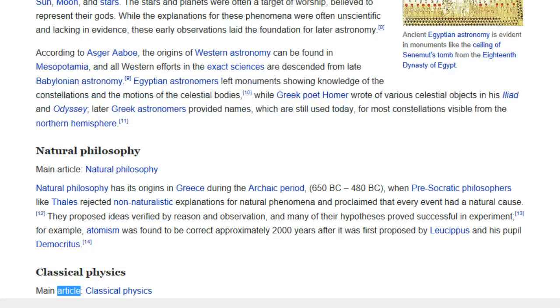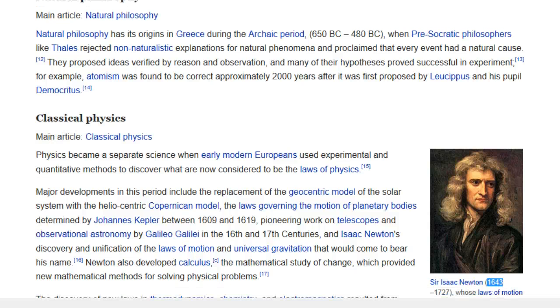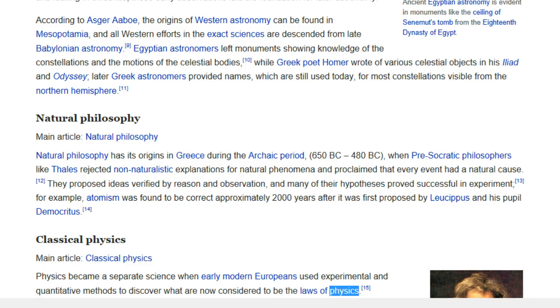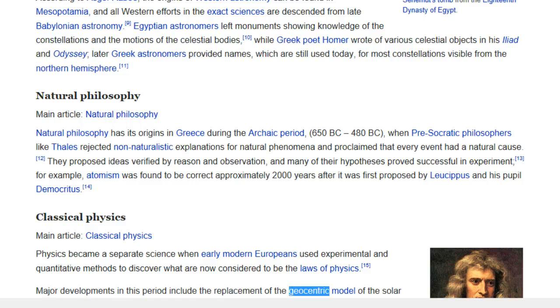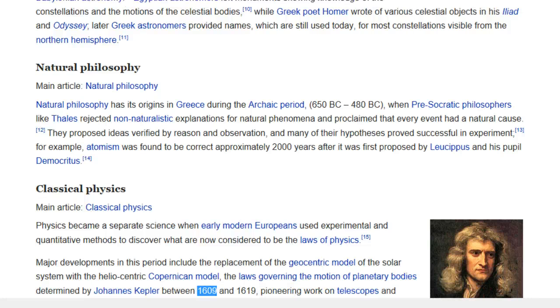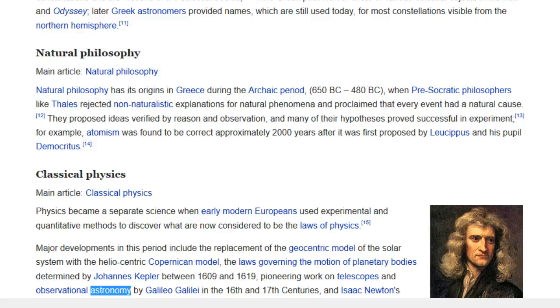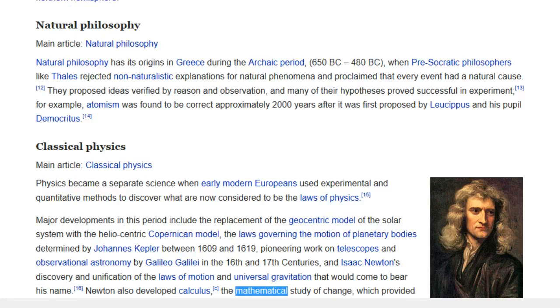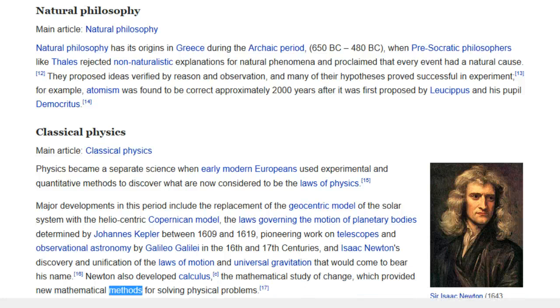Classical Physics. Main article, Classical Physics. Sir Isaac Newton, 1643-1727, whose laws of motion and universal gravitation were major milestones in classical physics. Physics became a separate science when early modern Europeans used experimental and quantitative methods to discover what are now considered to be the laws of physics. Major developments in this period include the replacement of the geocentric model of the solar system with the heliocentric Copernican model, the laws governing the motion of planetary bodies determined by Johannes Kepler between 1609 and 1619, pioneering work on telescopes and observational astronomy by Galileo Galilei in the 16th and 17th centuries, and Isaac Newton's discovery and unification of the laws of motion and universal gravitation that would come to bear his name. Newton also developed calculus, the mathematical study of change, which provided new mathematical methods for solving physical problems.